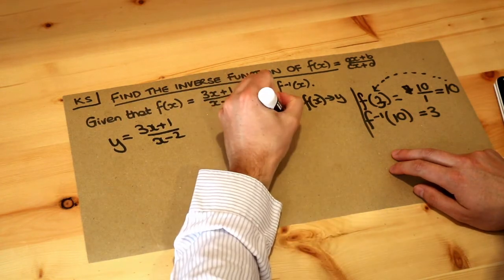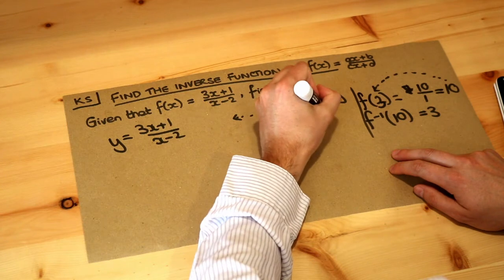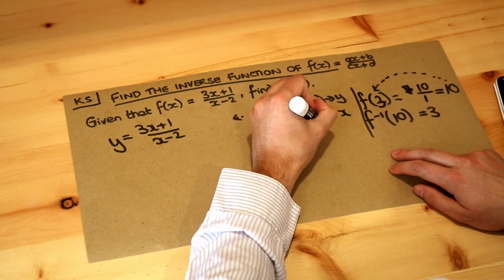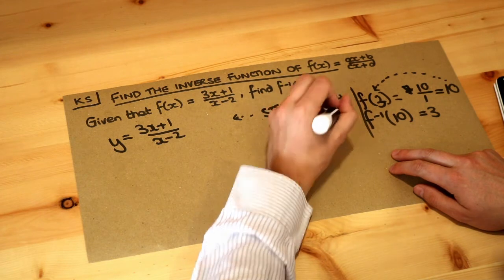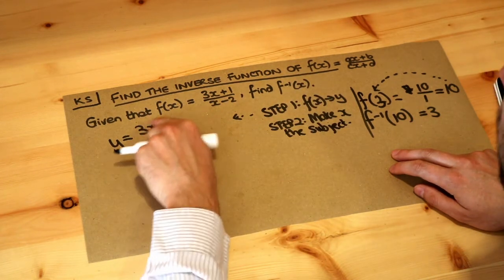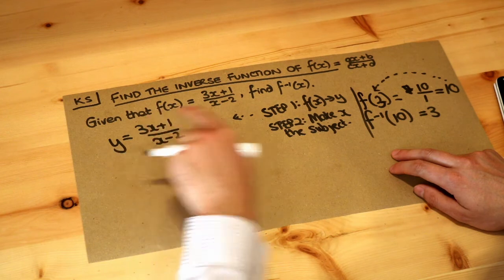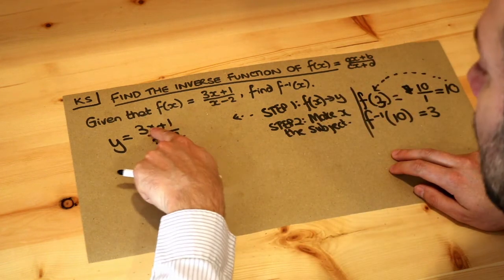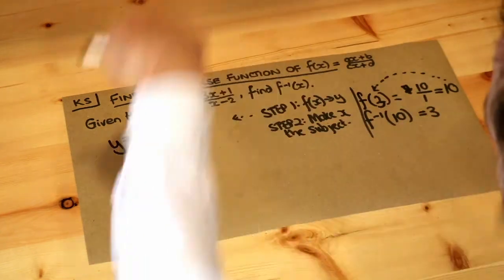And then step 2 was to make x the subject and the reason we did this was because in our current function we've got the output y in terms of the input x, and the inverse function does the opposite. So we want to get the input x in terms of the output y so that it goes in reverse.